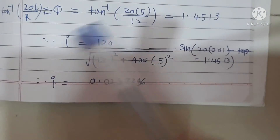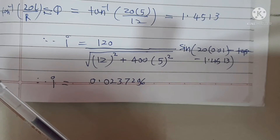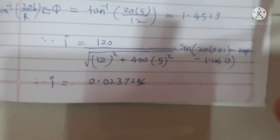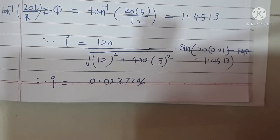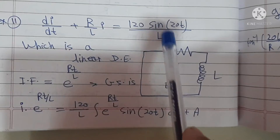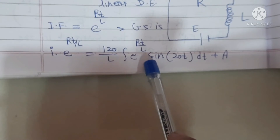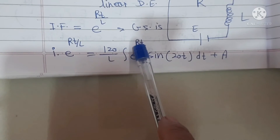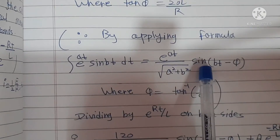In this type of problem, step 1 is to form the differential equation. After forming it, identify the type — here we get a linear differential equation, which is most commonly used in electrical circuit problems. Then find the integrating factor and general solution. In the general solution we encounter an integral of an exponential term multiplied by a trigonometric term, for which the standard formula from the book is used.